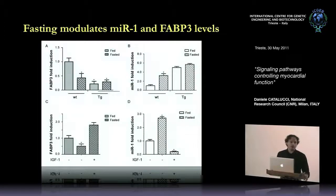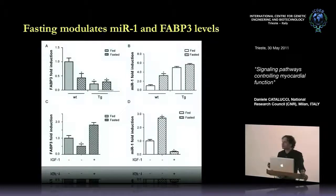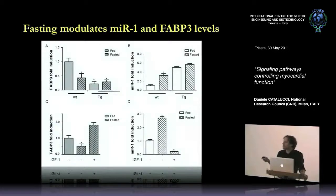To confirm the signaling mechanism, we injected IGF-1 intraperitoneally into fasted mice, where miR-1 is already elevated and FABP3 decreased. After IGF-1 injection, we observed a decrease in miR-1 expression level in the myocardium that corresponded to an increase in FABP3 protein level in the bloodstream — confirming that the IGF-1 signaling event truly controls this axis.